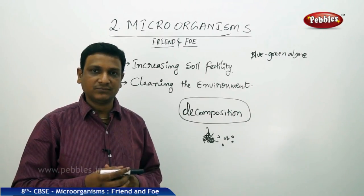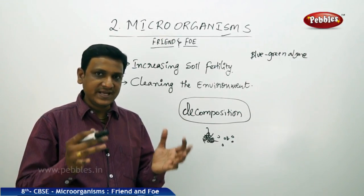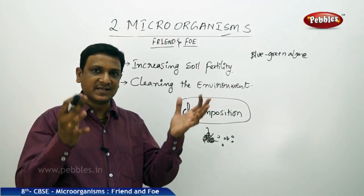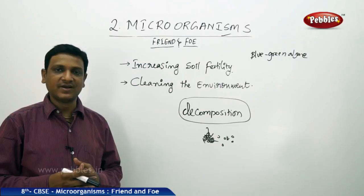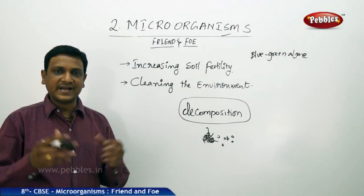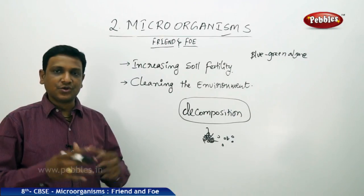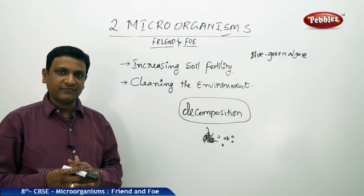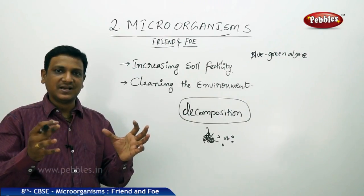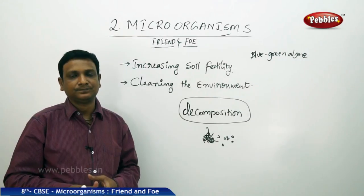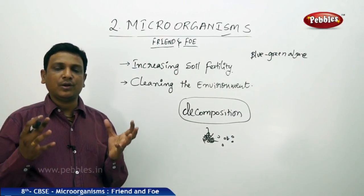When an animal dies and is buried in the soil, if the dead body is not decomposed, it is just a heap of flesh on the ground - a disturbance that causes diseases in the environment and community. The decomposition by microorganisms converts the flesh, bones, and skin of the animal into gases and compounds which mix up with the soil, increasing its fertility.